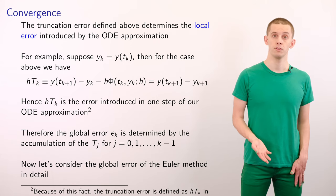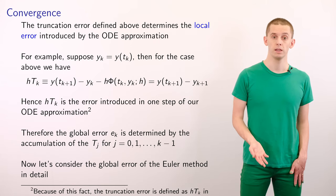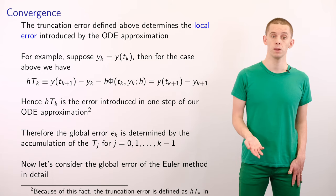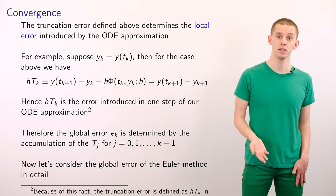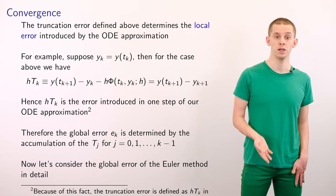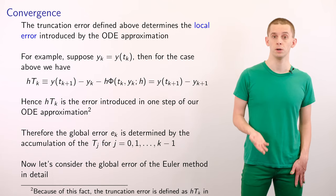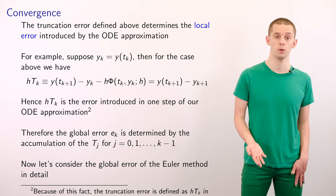The global error e_k will be determined by the accumulation of the T_j for j equal to 1 up to k minus 1.